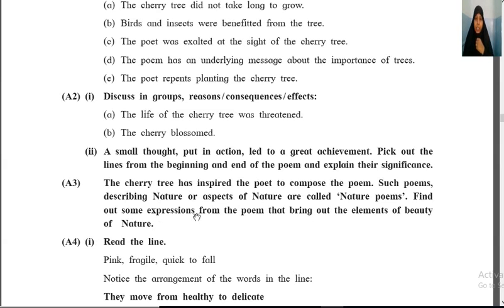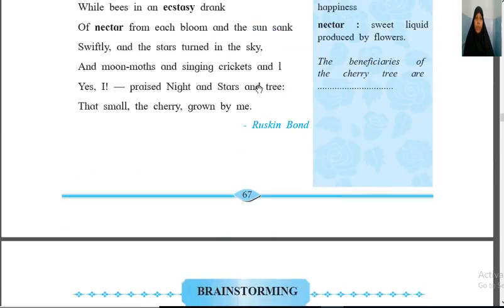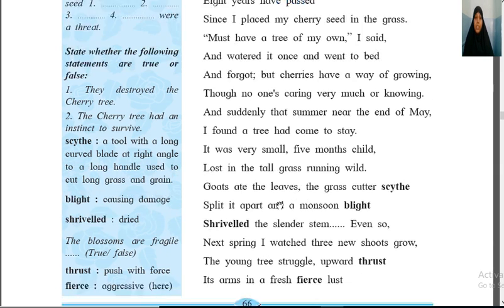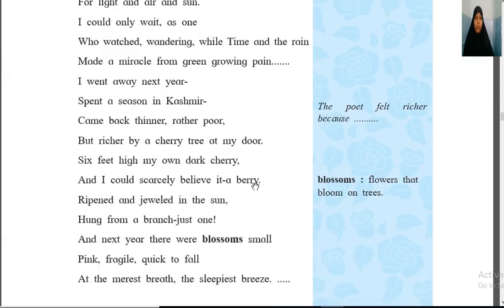After that: 'a small thought put in action led to a great achievement — pick out lines from the beginning and end of the poem and explain their significance.' For the small thought put in action: 'eight years have passed since I placed my cherry tree seed in the grass, must have a tree of my own, I said.' In this line, the poet had a thought that he wanted to grow a cherry tree, so he placed a cherry seed in the grass. This is the action. These lines show the process of a small sapling growing into a cherry tree.